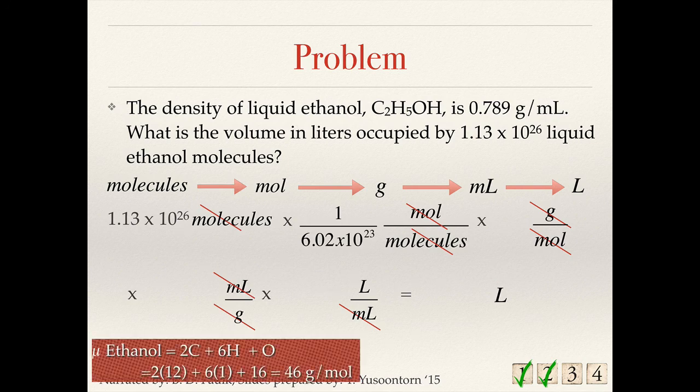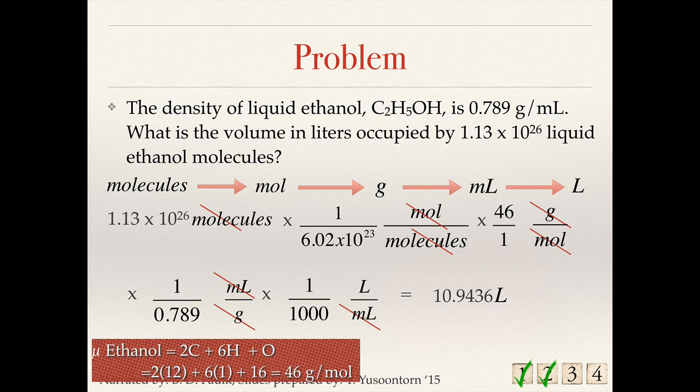The molar mass of ethanol is 46 grams, slightly rounded. Fortunately, we're given the density of ethanol. Remember that there's an implicit one there. And then we use the definition of milliliter. For every one liter, there are 1,000. And we get our final answer as 10.9436 liters.